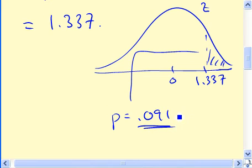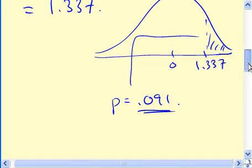Okay, not an especially small p-value, and in particular, in this case, we're asked for a 5% significance level. And since p is bigger than that, that means we do not reject H0.